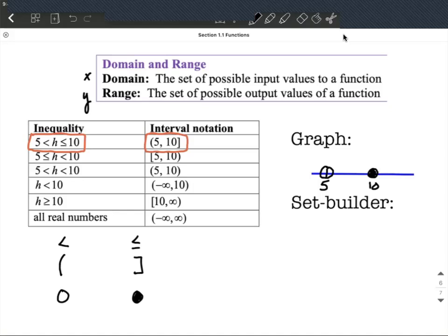Now h is allowed to be any value in between these two, so how we can represent that on a graph is we would shade that interval in between 5 and 10.